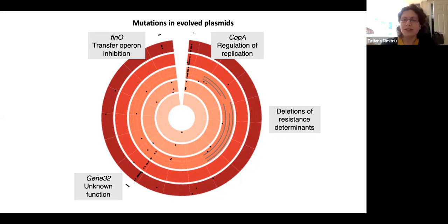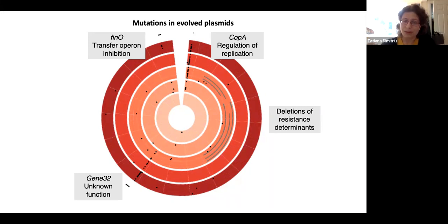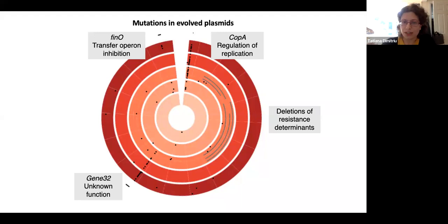We still selected clones on ampicillin to identify plasmid-carrying clones, so all clones retained the ampicillin resistance gene, which sits in the middle of these deletions. This suggests there are actually more deletions going on in the population, and we are strongly biasing for non-deleted mutants when collecting clones.